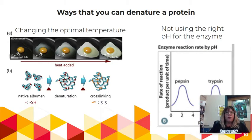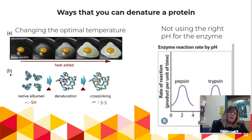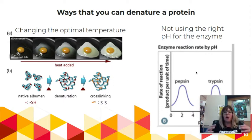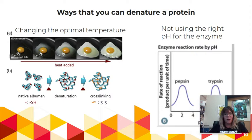Here are some examples of actual denaturing occurring. You have the change of optimal temperature through the cooking of an egg — you can see the folded structure unwinds into something else as it denatures. And here is pH: our body has different enzymes and our pH is usually between 7 and 8, except in our stomach where it's a 2. If you put any enzyme into the stomach environment they won't work at that pH and they unravel.